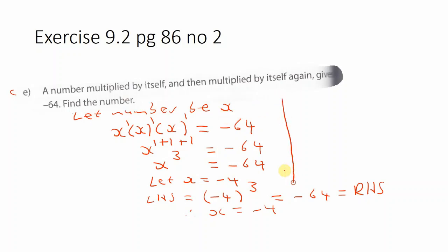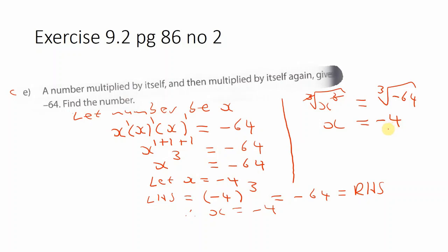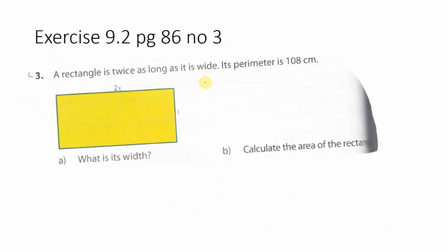Alternatively, instead of inspection, we note that the opposite of cubing is taking the cube root. Applying the cube root to both sides, the cube root and the cube cancel on the left, leaving x. On the right we find the cube root of negative 64: negative 4 times negative 4 times negative 4 gives negative 64, so x equals negative 4.